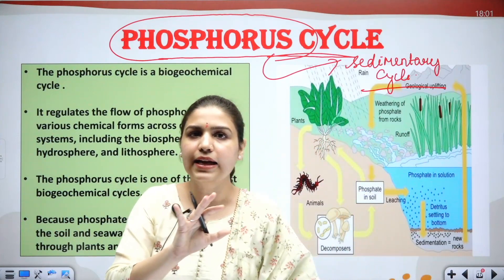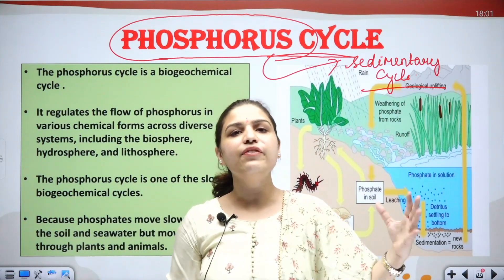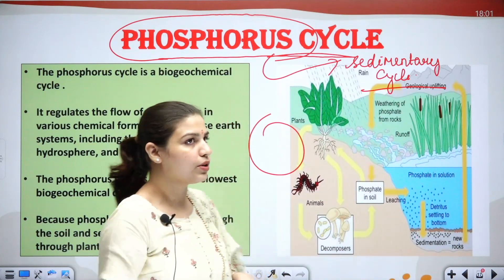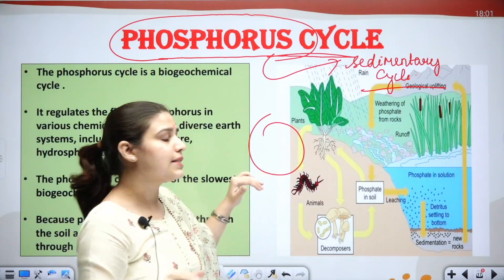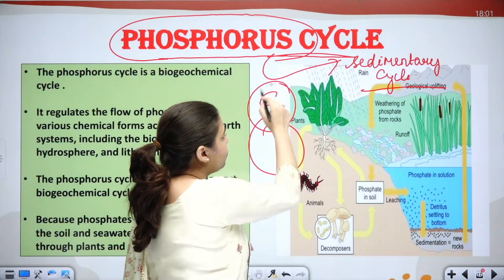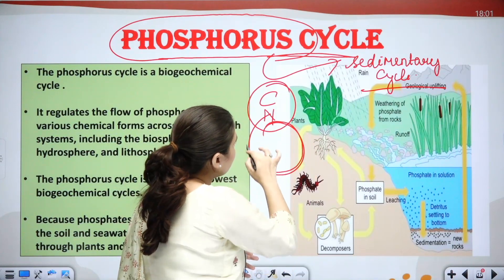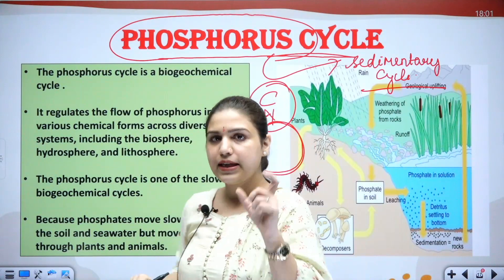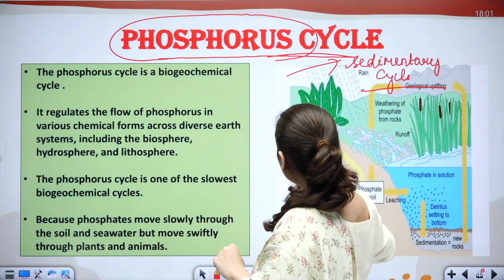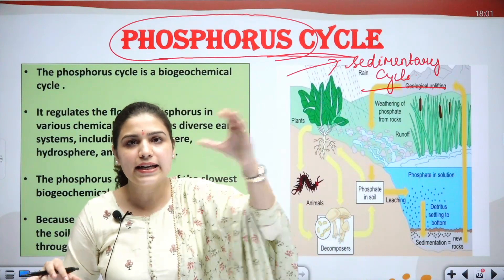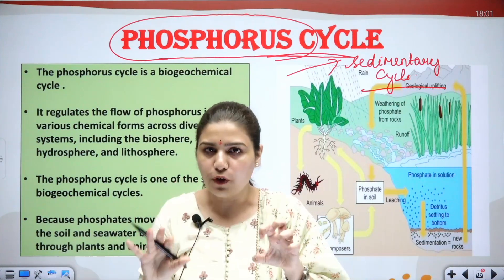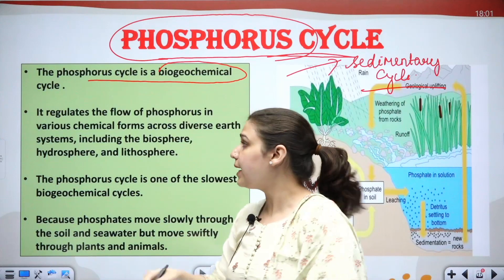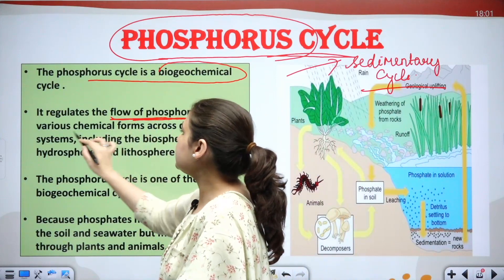We will be discussing how this nutrient cycle functions and the flow within it. When we discussed carbon and nitrogen, we saw how from the atmosphere the whole process takes place — they are transferred to various organisms and then back to the atmosphere again. Those were gaseous cycles. But here's a twist: phosphorus is not present in the atmosphere. So how does phosphorus enter this cycle and how does the whole process work?